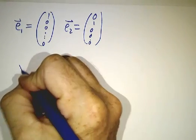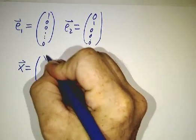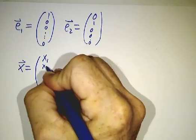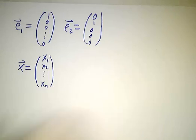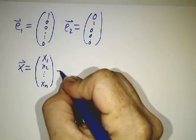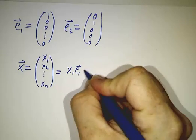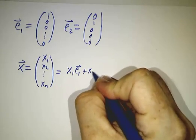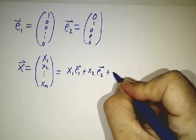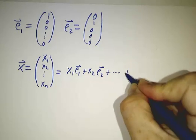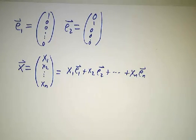That means that if you have a vector x, which is (x1, x2, ..., xn), well that's x1 times e1 plus x2 times e2, all the way up to xn times en.